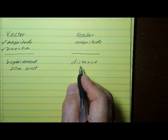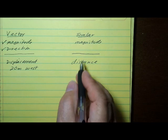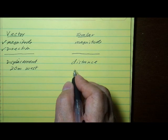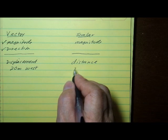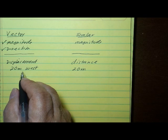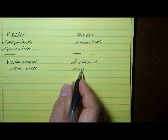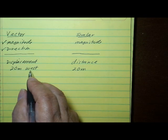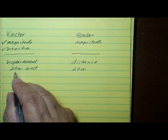A distance would be a scalar measurement because it doesn't have a direction. A distance might be something like 20 meters. So a vector gives you more information than a scalar does. A vector gives you a direction as well as a quantity or magnitude.